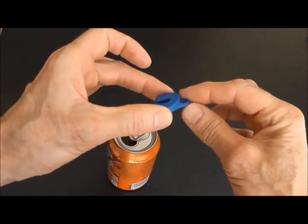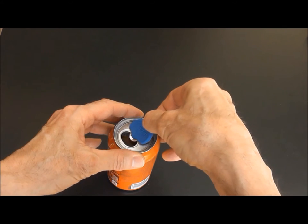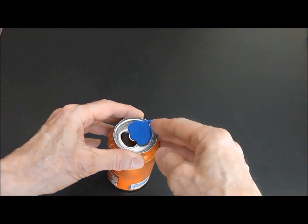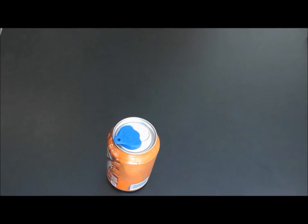Then we just simply turn the Cappy over for the closed side, slide it onto the tab, and with a simple rotation, we've just closed the can.